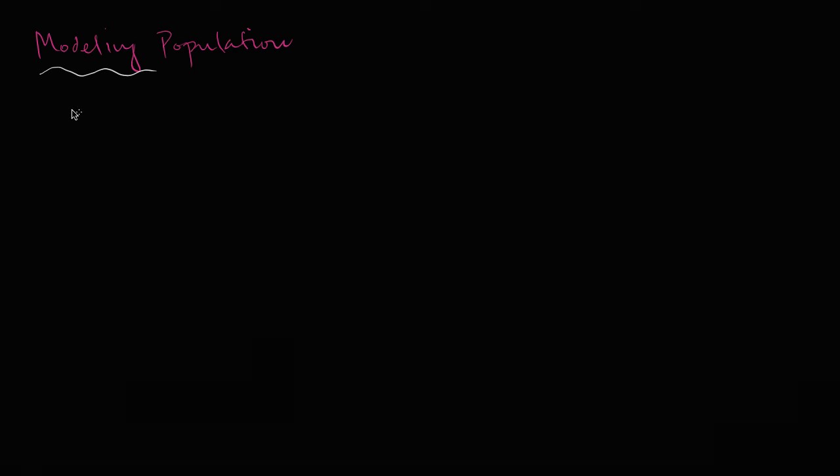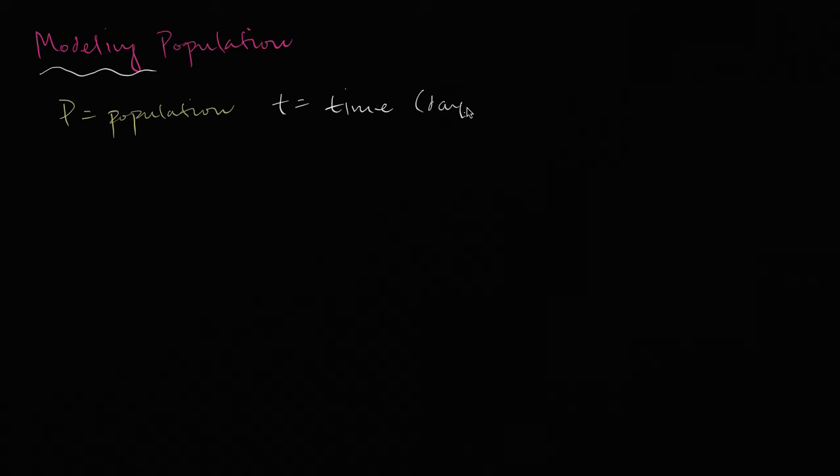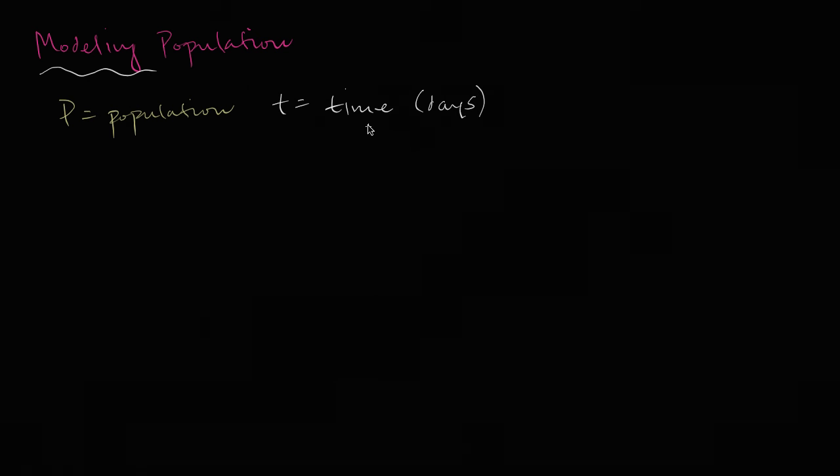So let's just define some variables. Let's say that P equals our population, and let's say that t equals the time that has passed in days. It could have been years or months, but let's say we're doing the population of insects that reproduce quite quickly, so days seem like a nice time span to care about. Now, what would be a reasonable model?